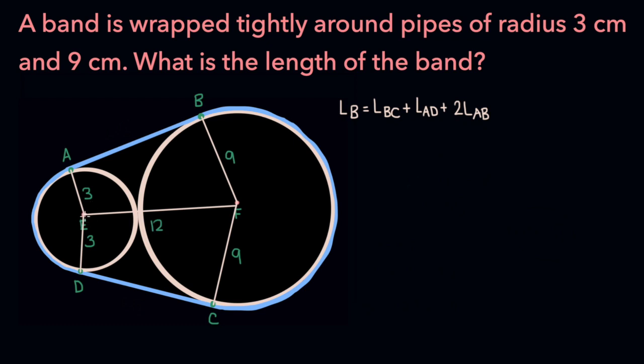Starting from the center of the small pipe, so E, let's draw a line that's parallel to the line segment AB, such that it connects with the radius of the larger circle. So that line would look something like this.